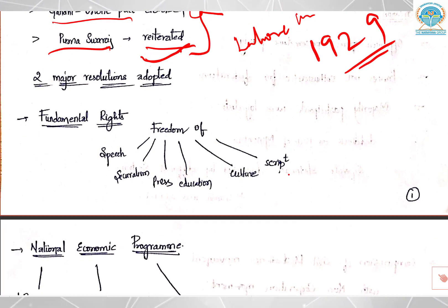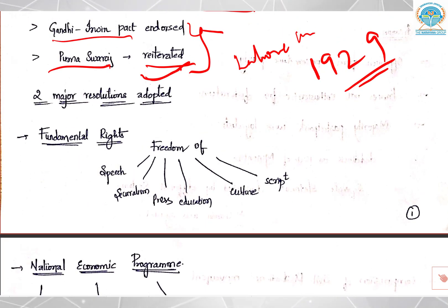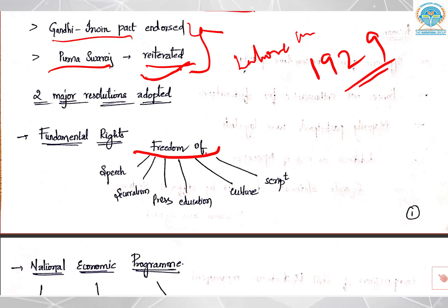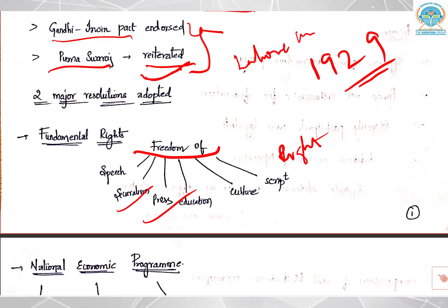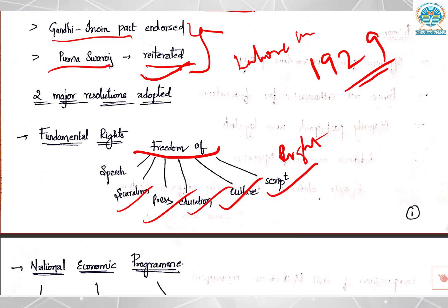In the Karachi session, two major resolutions were adopted. The first one is about fundamental rights — they talked about the freedom of speech, press, assembly, right to vote (adult franchise), equal legal rights, secularism, free and compulsory education, and protection to culture and script.